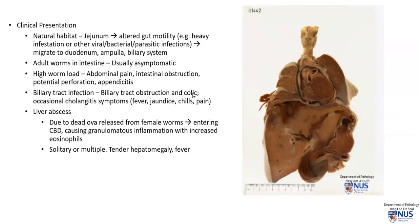In the biliary tract, there can be obstruction and colic, and even potentially cholangitis, which gives rise to fever, jaundice, and chills, as well as right hypochondral pain. In the liver, there can be abscess formation, often due to dead ova released from female worms. These ova enter the common bile duct and can cause heavy granulomatous inflammation as well as increased eosinophils. The liver abscesses can be solitary or multiple and give rise to tender hepatomegaly and fever.